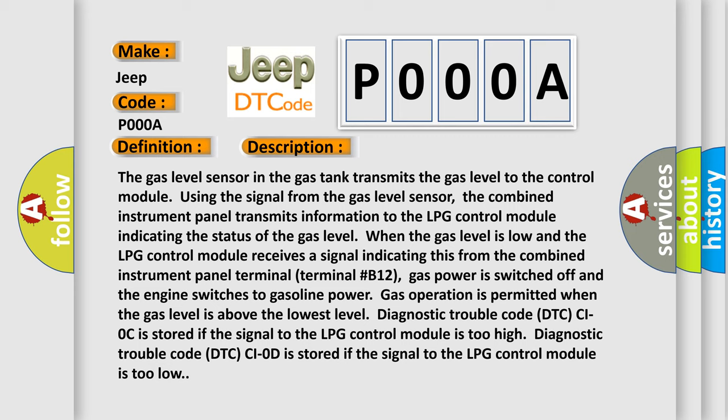Diagnostic Trouble Code DTC P000A is stored if the signal to the LPG control module is too high. Diagnostic Trouble Code DTC P000A is stored if the signal to the LPG control module is too low.